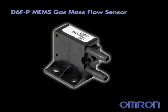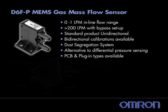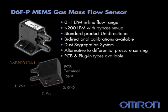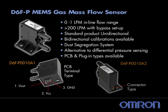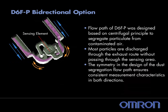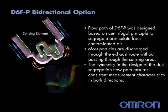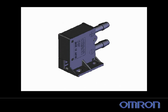The D6FP model is available in two packages: a PCB terminal and plug-in type. It can measure up to one LPM in-line or be used in a bypass setup for much larger flow rates as an alternate to differential pressure sensing. Having both flow ports on the same side simplifies the customer's design and installation. The symmetry of the design makes it possible to accurately measure flow from either direction.